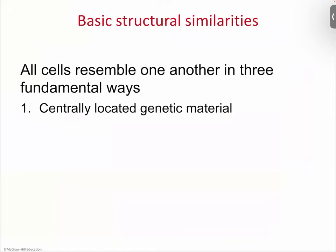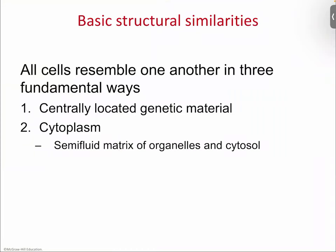Now let's look at some similarities for all cells. Everything that is alive is made of cells, but not all cells are the same — there are two major groups. However, all cells have some things in common. First, you have to have some sort of centrally located genetic material. Notice it doesn't say you have to have a nucleus — it just says you need a central location. The real emphasis is on the genetic material itself.